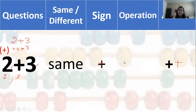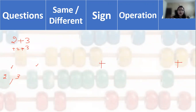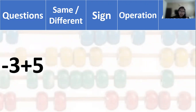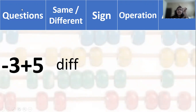And now: minus 3 plus 5. Same sign or different sign? Different sign — so the table is different. It is a different sign. That's why we tackle the sign first, because the sign is difficult. First, make them think about the sign. Different sign — repeat the sign rule. Different sign means subtraction operation.